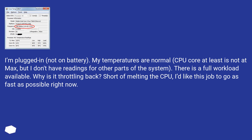I'm plugged in, not on battery. My temperatures are normal — CPU core at least is not at max — but I don't have readings for other parts of the system. There is a full workload available. Why is it throttling back? Short of melting the CPU, I'd like this job to go as fast as possible right now.